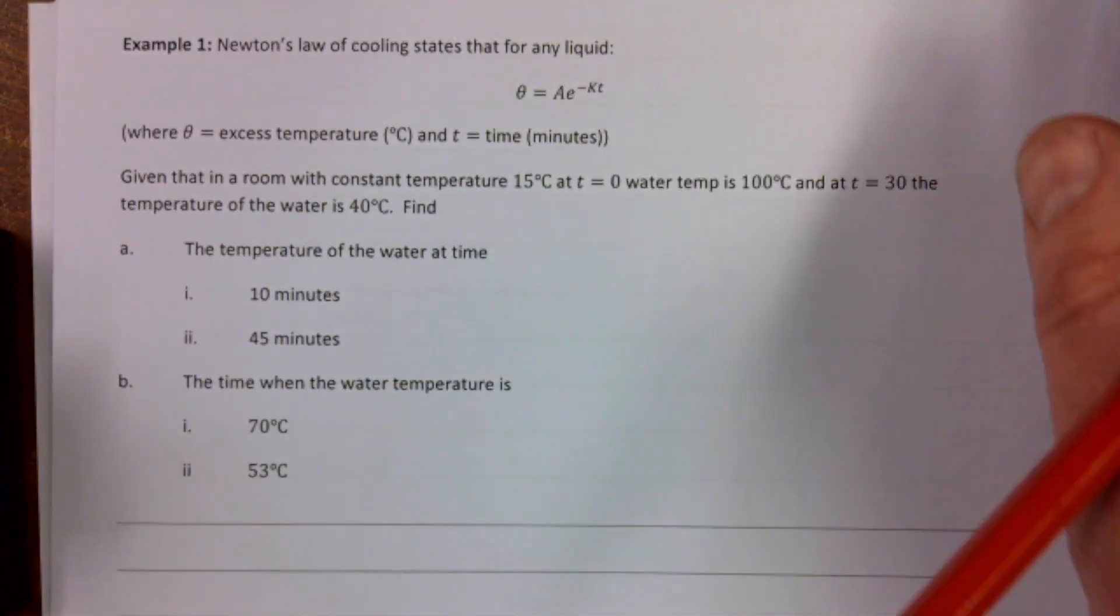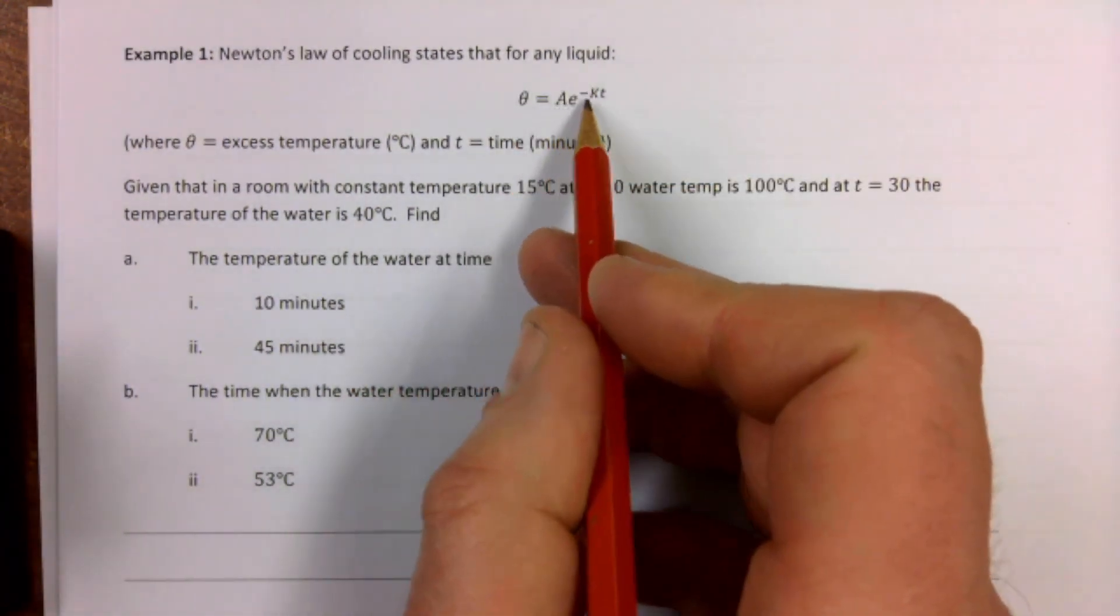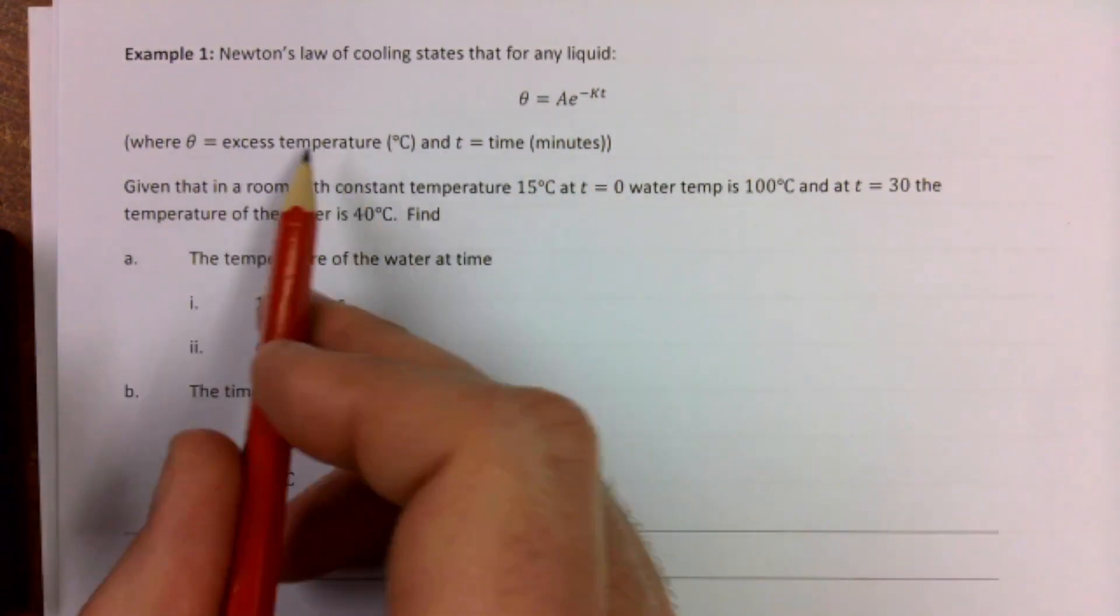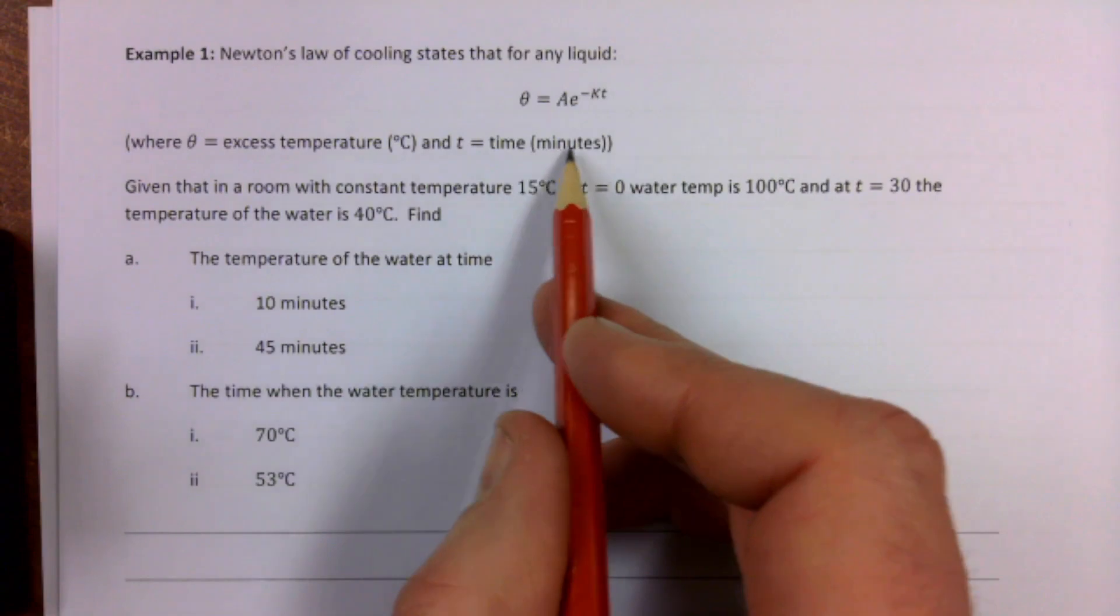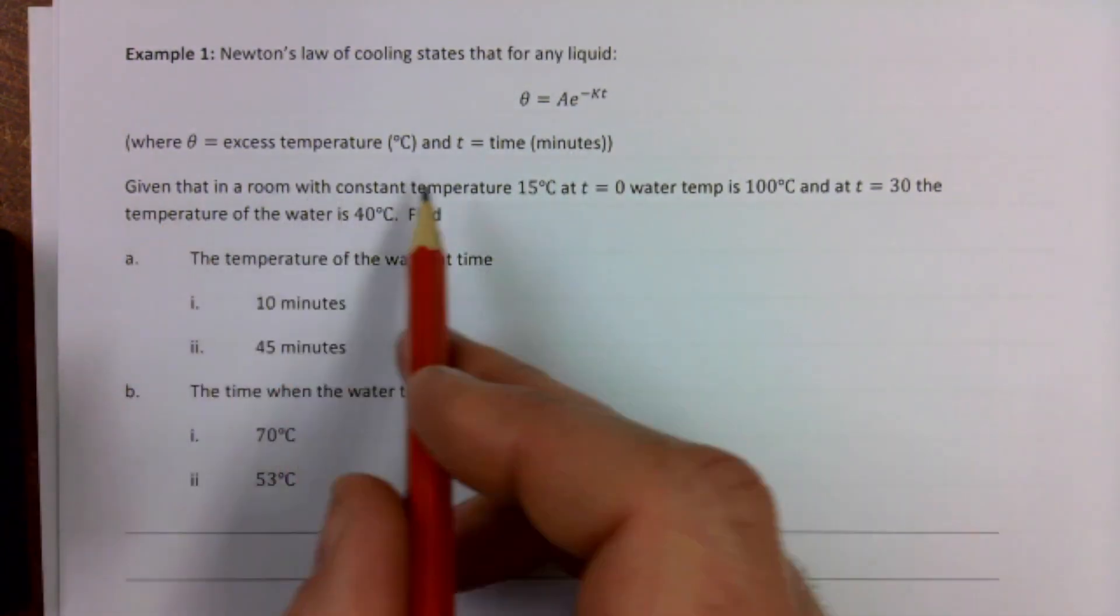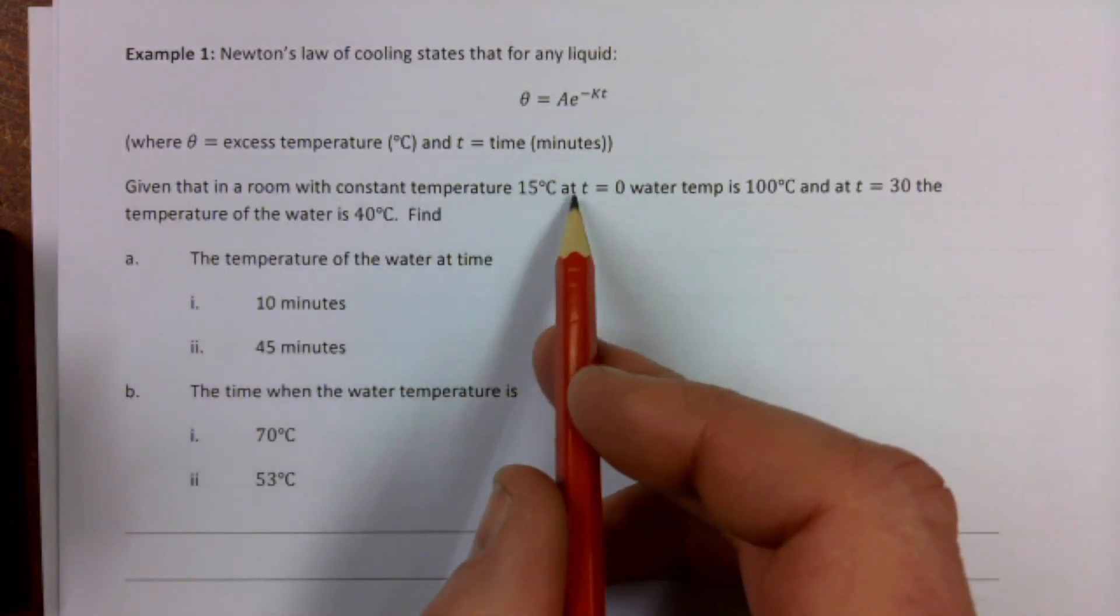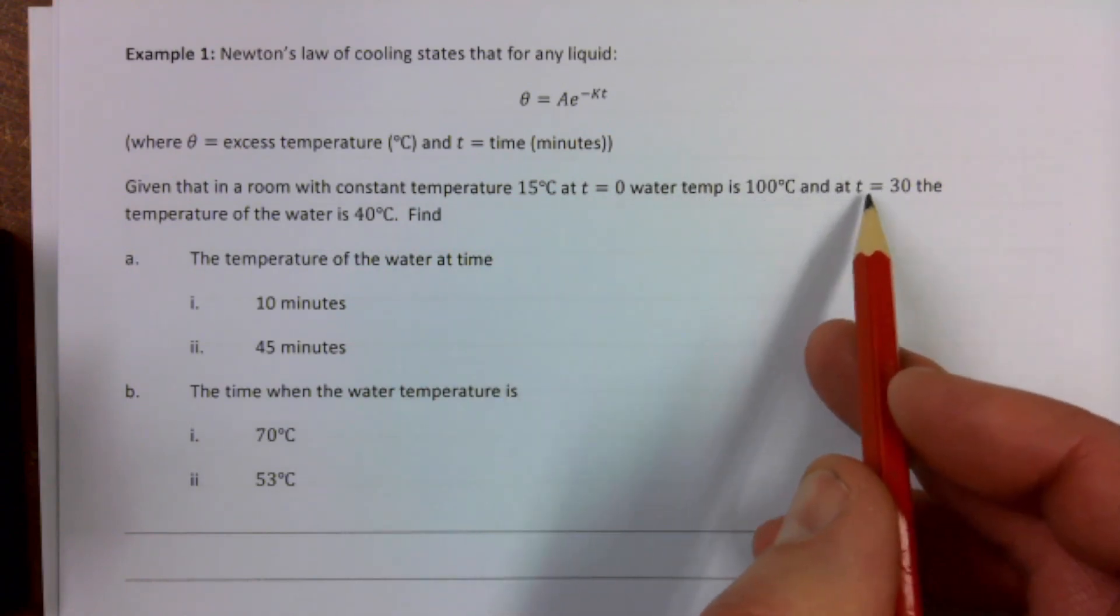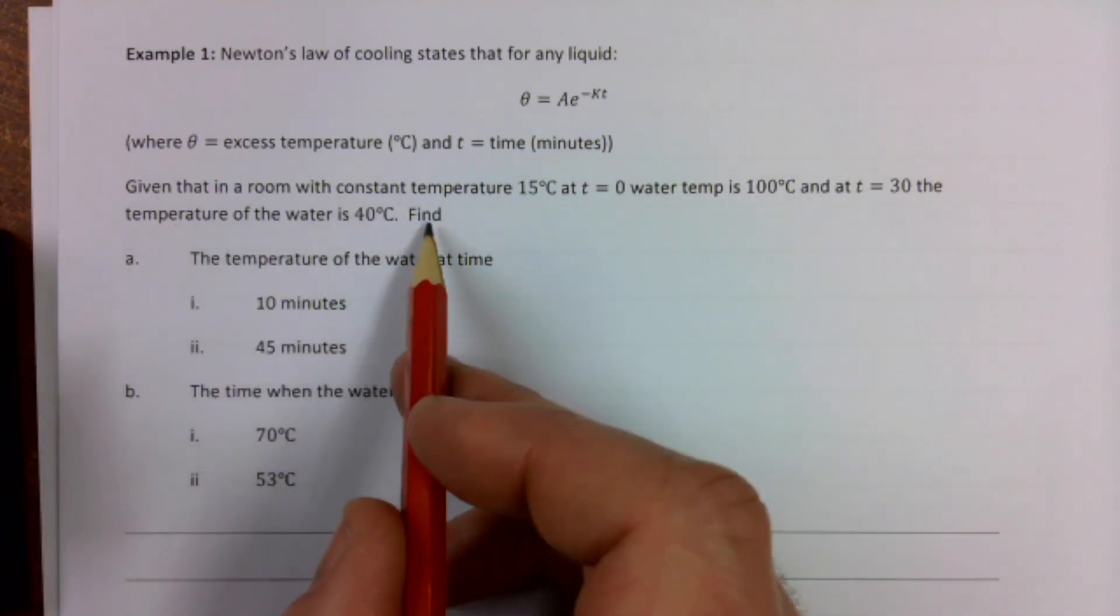Newton's law of cooling states that for any liquid, θ = Ae^(-kt), so it's a minus because it's cooling down. Where θ is the excess temperature and t is the time in minutes. Given a room with constant temperature at 15°C, at time 0 the water temperature is 100°C, and at time 30 the temperature of the water is 40.